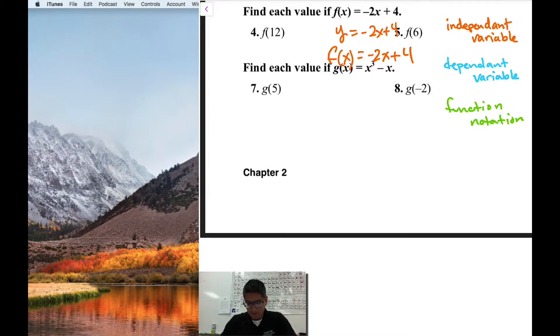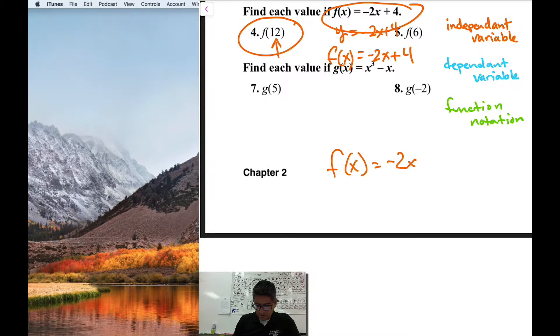My dependent variable x, and as you can see here number four, it's telling us that it's a function of 12. So what that means I'm going to move this down here so I can work with it. f of x equals negative 2x plus 4, and number four is telling me that this is a function of 12. What that means is that I've replaced everywhere there's an x, I need to replace it with a 12. That's my independent variable.